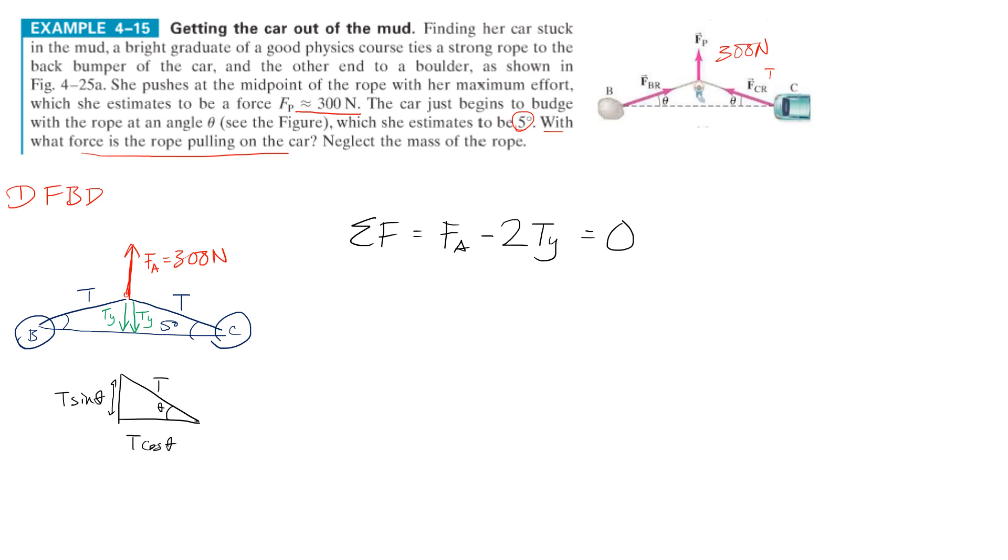I know it's zero because this thing says it's just about to budge. It just begins to budge, meaning it's right at the zero, almost going to get past zero. If it does start to move, then the only way for us to solve this problem is to know the acceleration of the car. But thankfully, it's just about to budge. It's just still so we know what the max force is on it. Okay. So, let's substitute ty with the actual component. So that means f of a minus two times t sine theta is equal to zero, right? That means to solve for t, I would say, negative two t sine theta is equal to negative fa divided by negative two sine theta. That means the tension, meaning the force of the rope on the car, is equal to f of a over two sine theta. So let's just solve.